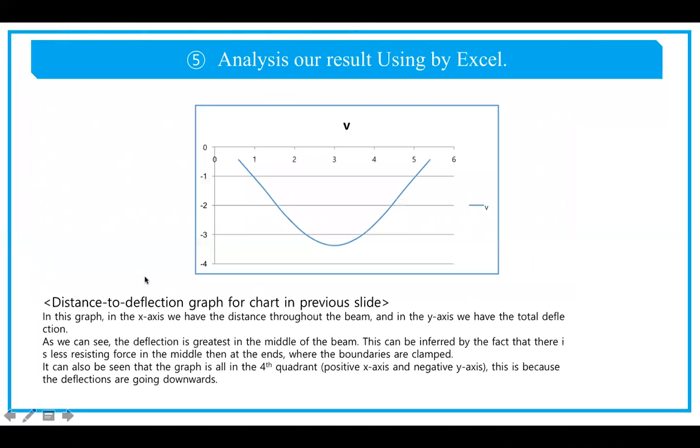Here we have the graph for the chart in the previous slide. We can see that the whole deflection goes downward, as I mentioned earlier, because the forces were directed downward. We see that the deflection is greatest in the middle of the beam.